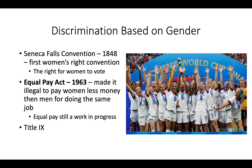Discrimination based on gender goes all the way back to the Seneca Falls Convention in 1848 — the first women's rights convention — out of which came the push for women's suffrage. By 1920, women had the right to vote in the United States. And in North Dakota studies, the key date: in 1917, North Dakota women had the right to vote in state elections, ahead of the federal government. North Dakota was ahead of its time.